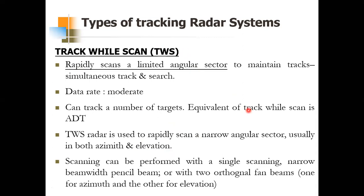These were the four types of tracking radar systems. If this question appears in an exam, you need to write all four types. The next topic is angle tracking, which will be explained in the next video. Thank you for listening.